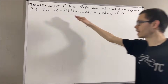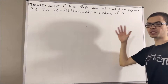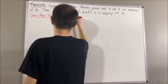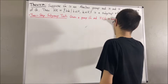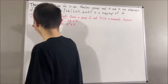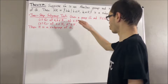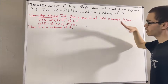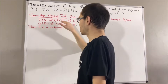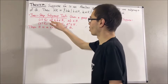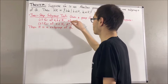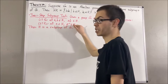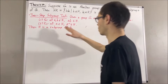Now, to prove that hk is a subgroup of g, we are going to use the two-step subgroup test. If we're given a group g, and we're given h as a non-empty subset of g, then if h is closed under the operation of g — in other words, for all elements a and b in h, a times b is an element of h — and for all elements a in h, the inverse of a is in h, then we can conclude that h is a subgroup of g.